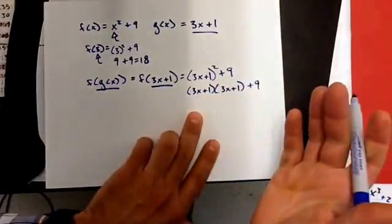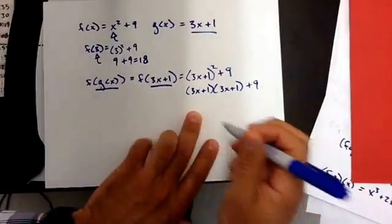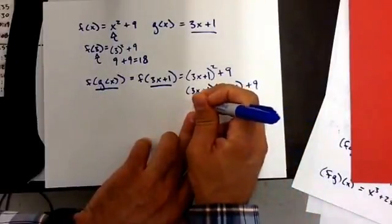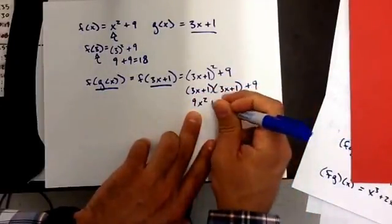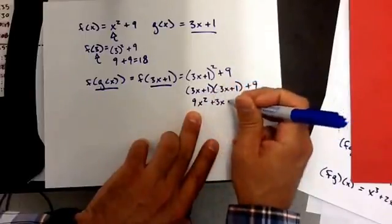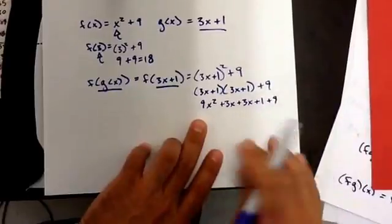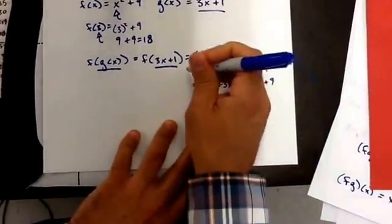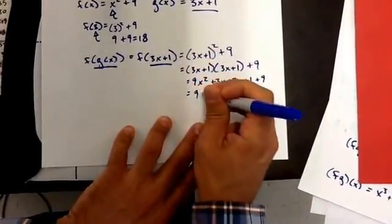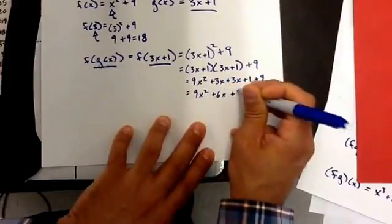Now I'm going to distribute, which is the same thing as foiling in this case. So I'm going to do 3x times 3x is 9x squared. 3x times 1 is 3x. 1 times 3x is 3x. And 1 times 1 is 1. Combine like terms. So this is going to become 9x squared plus 6x plus 10.